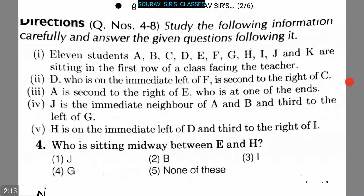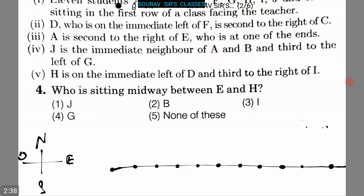According to the information, A is second to the right of E, who is at one of the ends. So E must be at the extreme left position, and A is second to the right of E, so A is placed here.